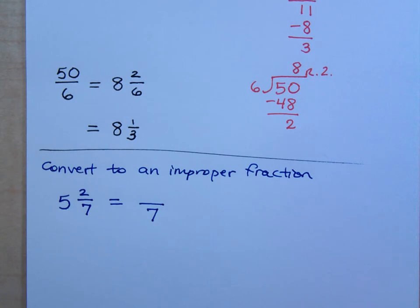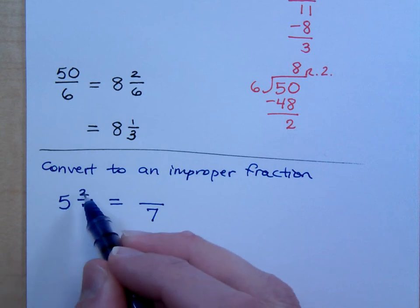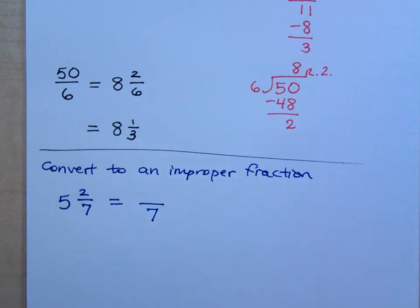And how did I get that numerator? 5 times 7 plus 2. You multiply 5 times 7, and then you add the 2, because think about what you're doing. You're saying you have 5 whole parts, 5 whole units that are made up of 7 parts each.